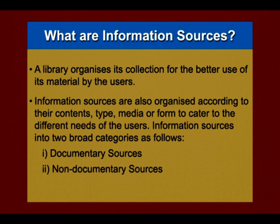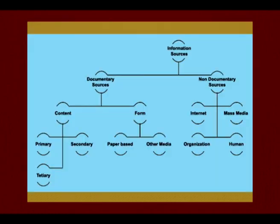What are information sources? A library organizes its collection for the better use of its material by the users. Information sources are also organized according to their contents, type, media or form because there are different kinds of forms available to cater the different needs of the users. Information sources are of two broad types: documentary sources and non-documentary sources.